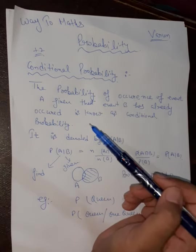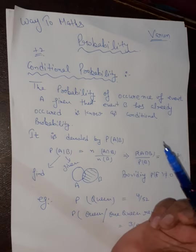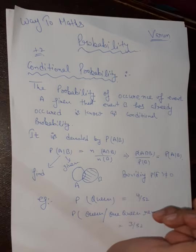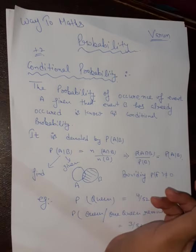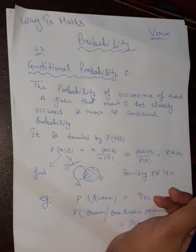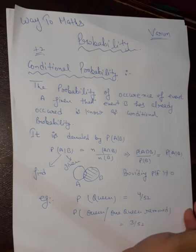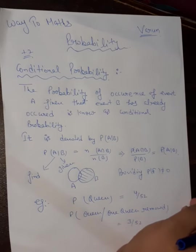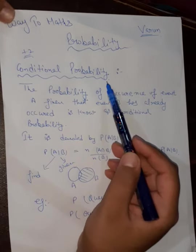Conditional probability — the definition — is something we can look at from a number of angles. We will study the definition, notation, formula, and examples to understand this very deeply. The basic concepts of probability must be strong in order to solve questions, otherwise it will give you trouble. So see and listen to this video very carefully.